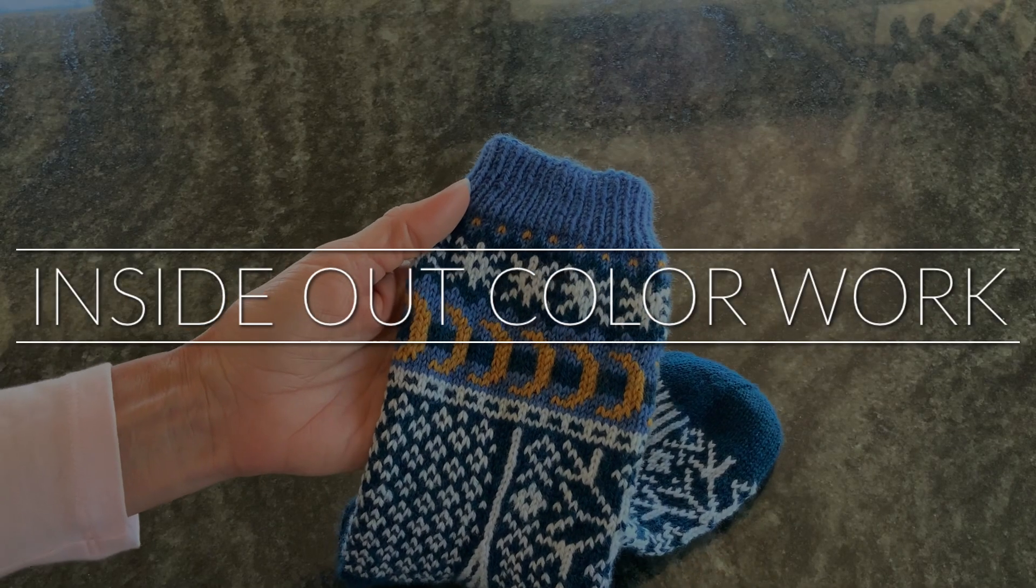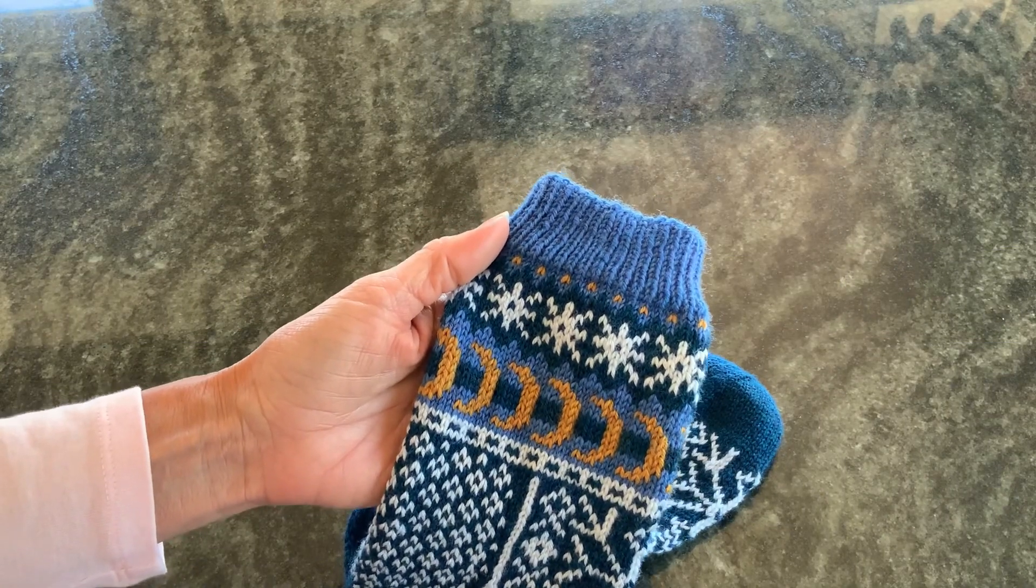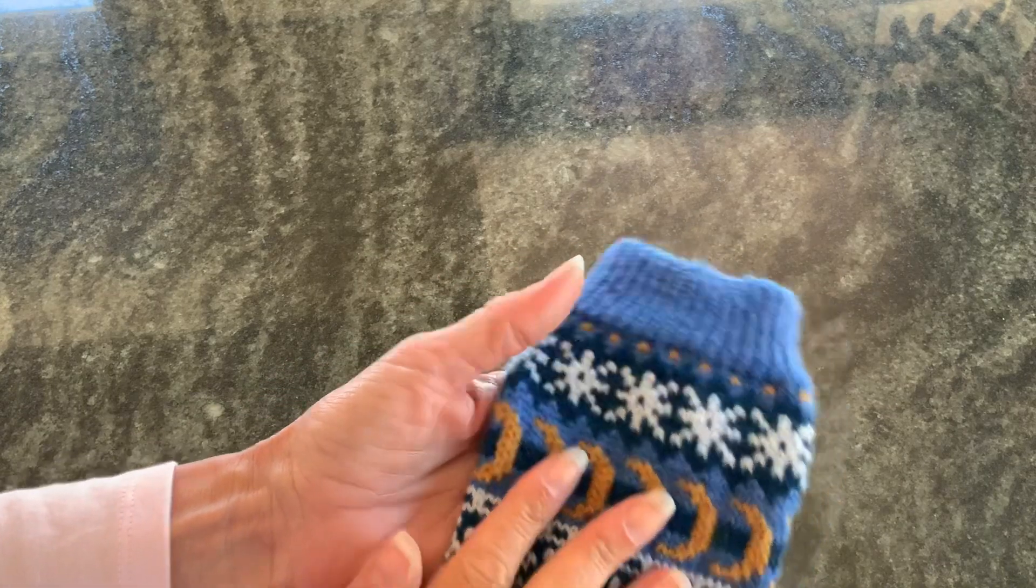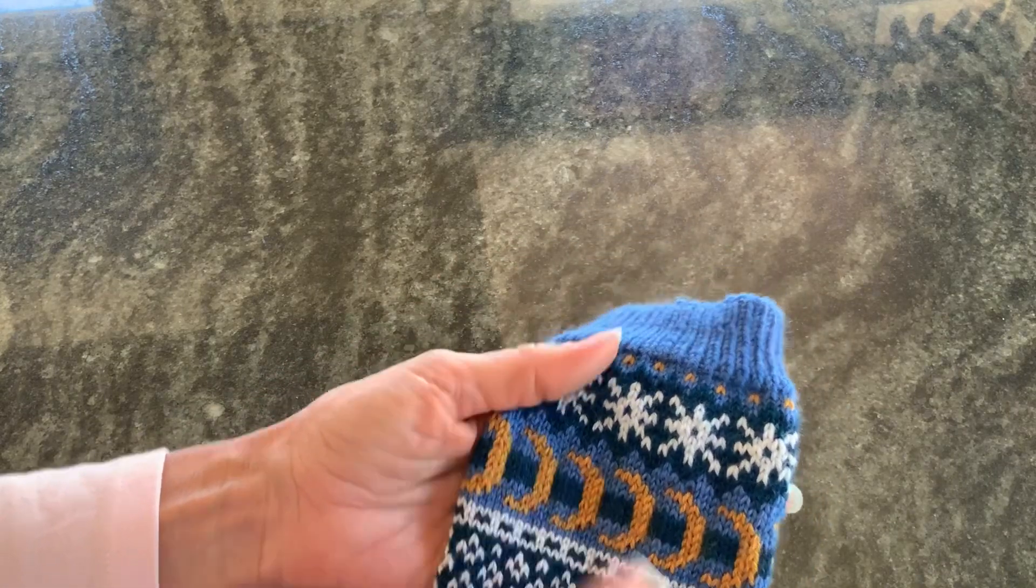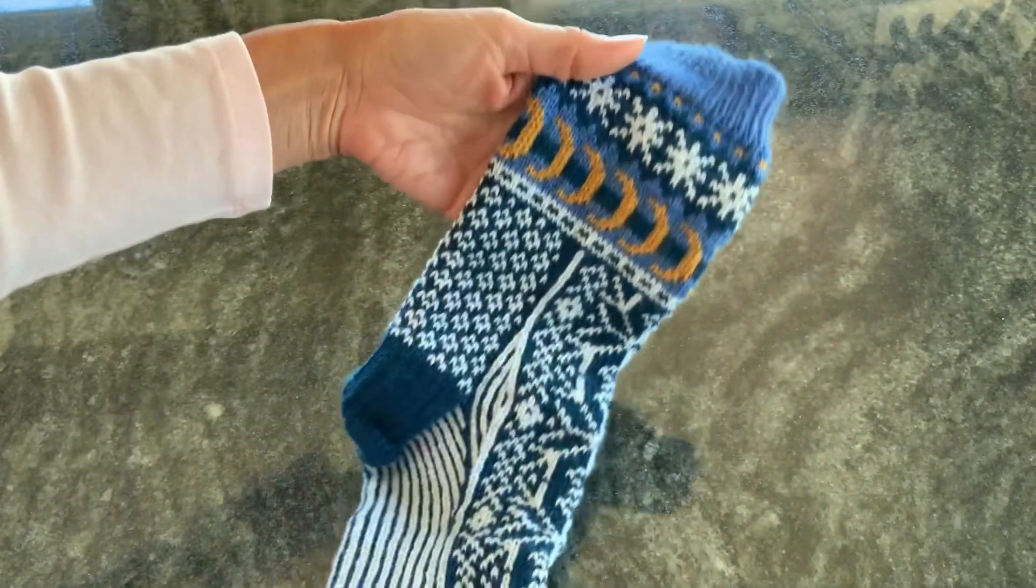Hi, this is Wendy from Knitters Brewing, and today I want to give you a simple solution to a common issue that knitters have when they're doing small circumference colorwork knitting. By small circumference, I mean projects such as socks, fingers on a glove, or sleeves of a sweater.